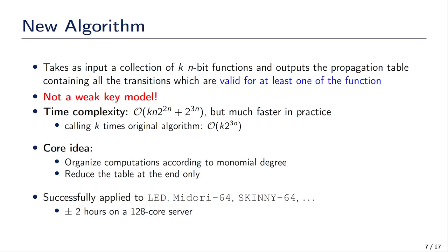As an example, we were able to compute the propagation tables associated to the super S-boxes of LEAD, Midori-64, Skinny-64, TWINE, GIFT, and many other block ciphers. It takes about two hours on a 128-core server. For Skinny-64 it is faster because there are only 2^8 functions in the collection since only two nibbles of the key are involved. That was our first result: computing propagation tables associated to super S-boxes.